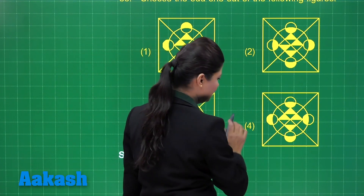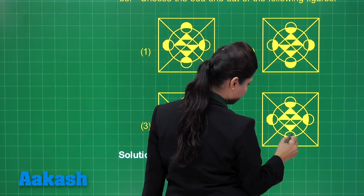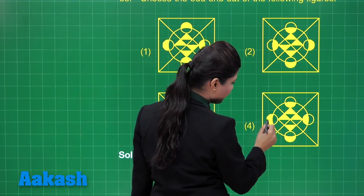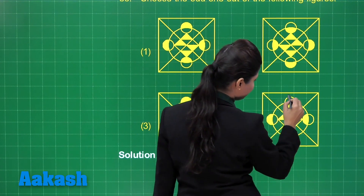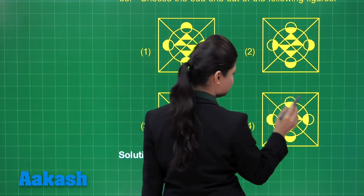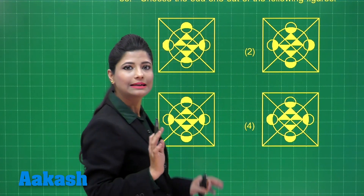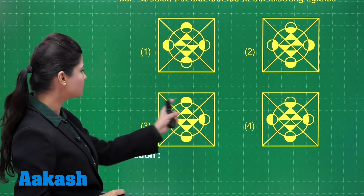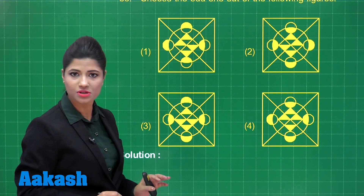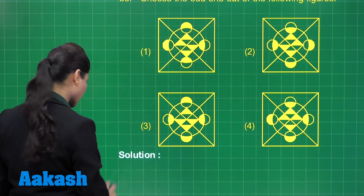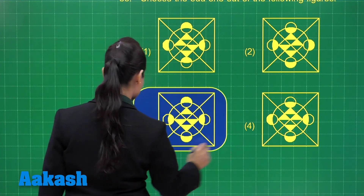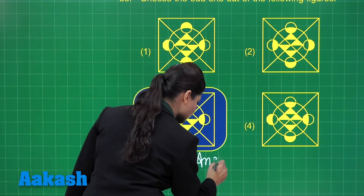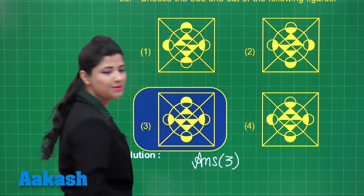Looking at another option, we can see that these two circles consecutively have the upper portions filled, while these two have empty portions for the upper area. That means the same pattern is not followed in the third option. So you can definitely mark the correct answer as option number 3. This is the odd one out.